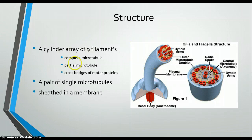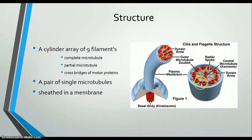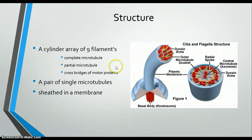So the structure: there's a cylinder array of 9 filaments — the red things right here — and there's 1, 2, 3, 4, 5, 6, 7, 8, 9. Then there's a single pair of microtubules right here in the middle. And then there is a sheath membrane, which is also a plasma membrane — this blue right out here.